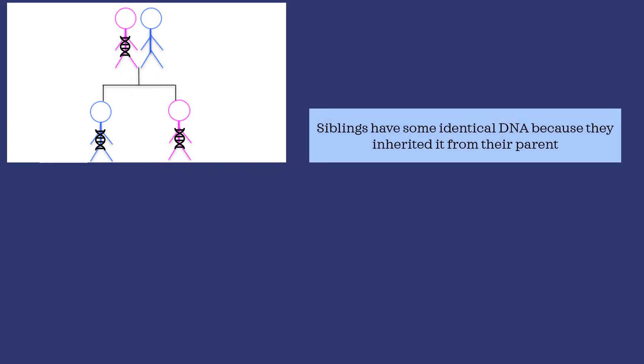So imagine that this mom has a certain sequence of DNA that she passed to both of her children. As is true in all families, siblings, including half siblings, have some identical DNA because they inherited it from their shared parent.